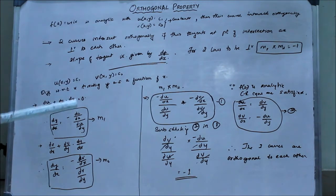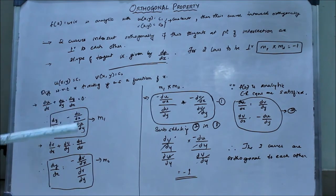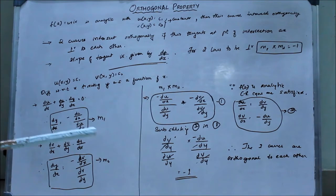we get du/dx plus du/dy into dy/dx equal to 0. And then we need to find out dy/dx, that is the slope. So dy/dx equals negative of du/dx divided by du/dy, that is equal to m1.